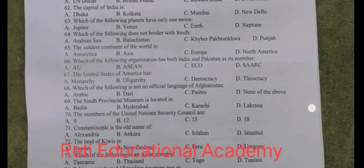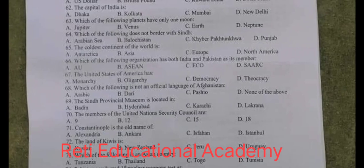Question number 65. The coldest continent of the world is: A. Antarctica, B. Asia, C. Europe, D. North America. The correct answer is A. Antarctica.